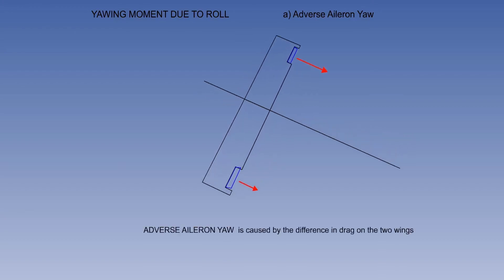The secondary effect of roll is yaw. Adverse aileron yaw has already been described, producing a yawing moment opposite to the direction of roll, because of the difference in drag from the ailerons on each side.